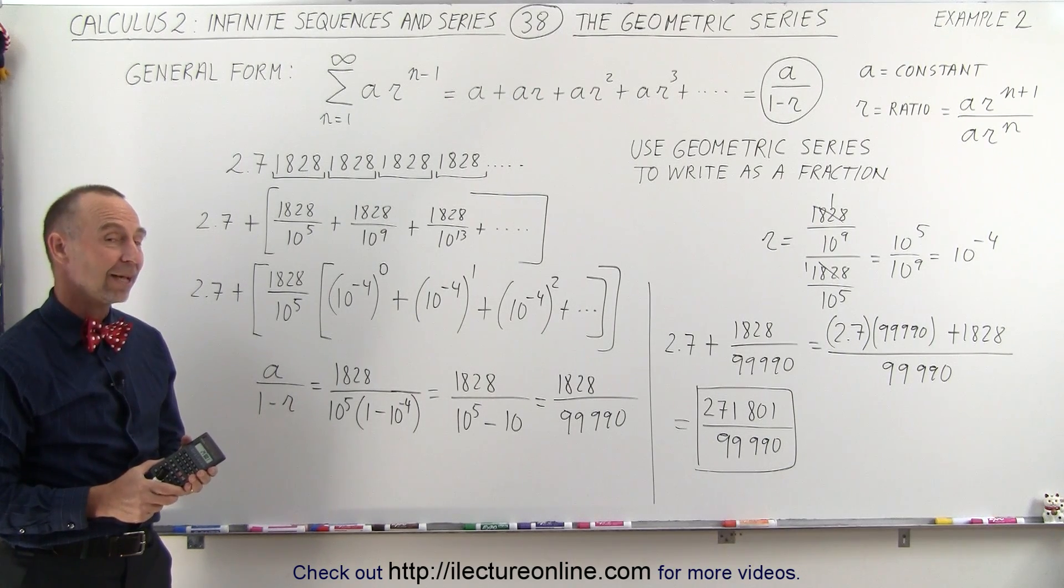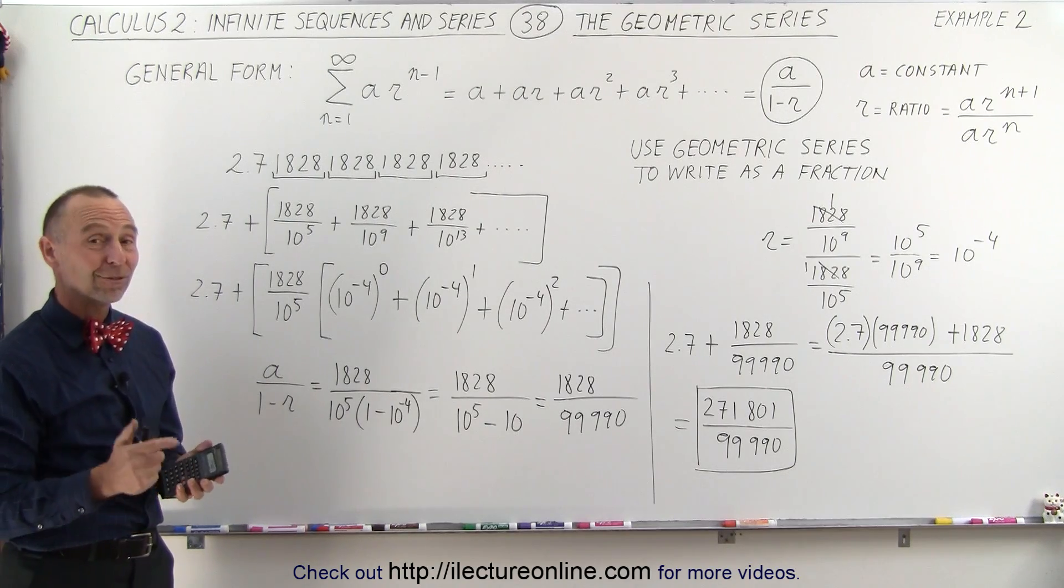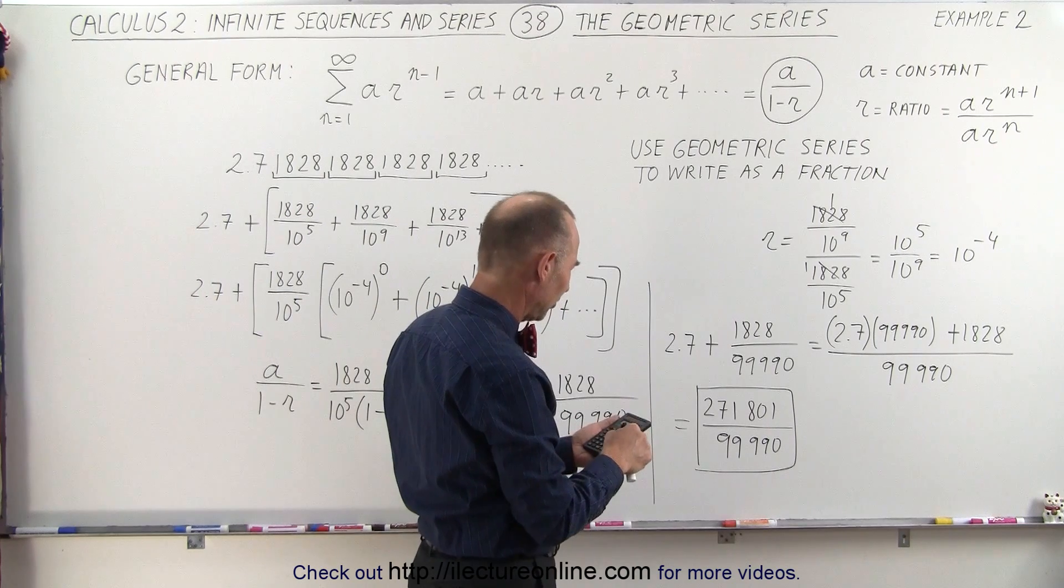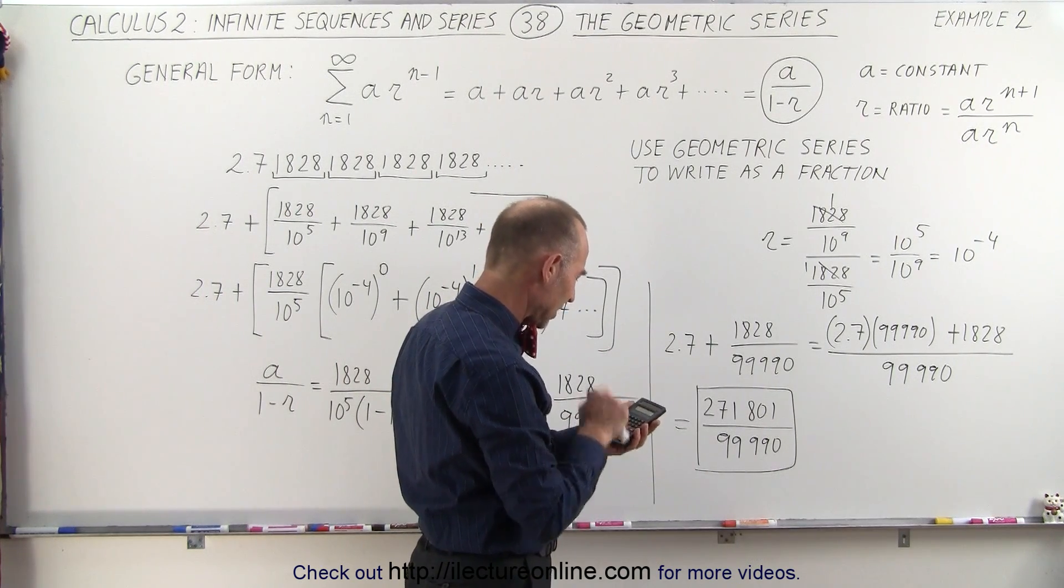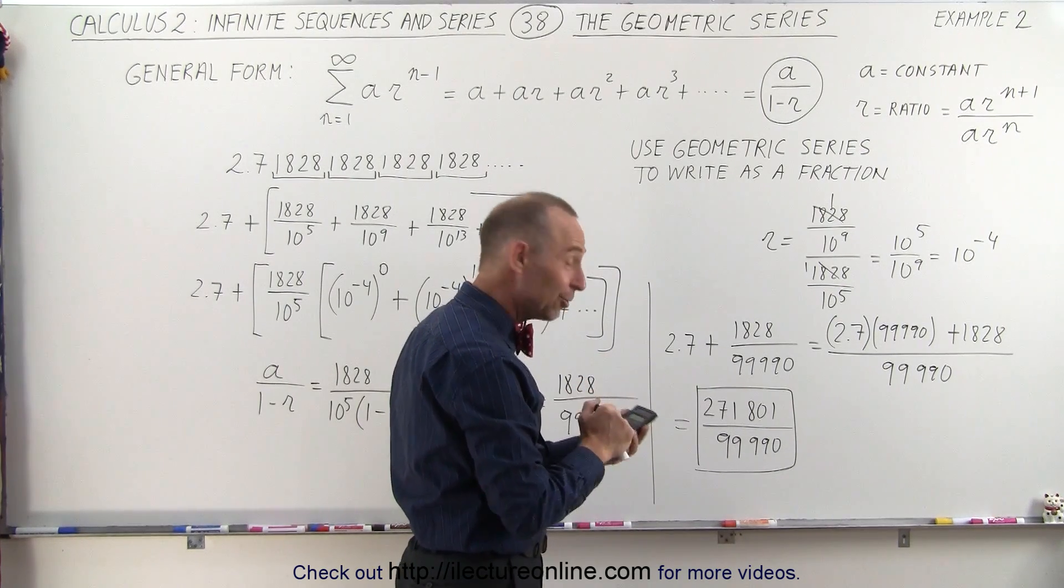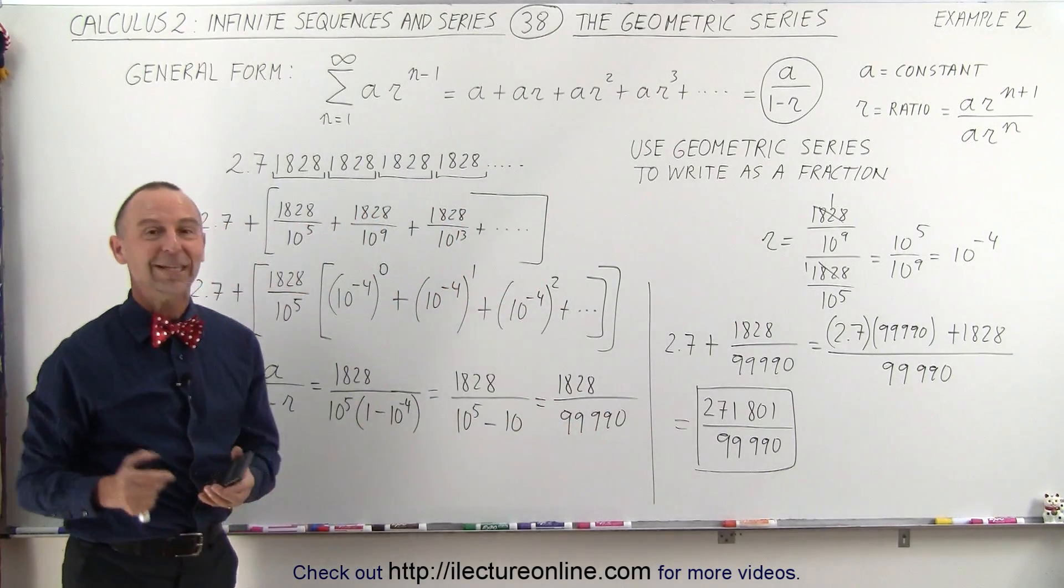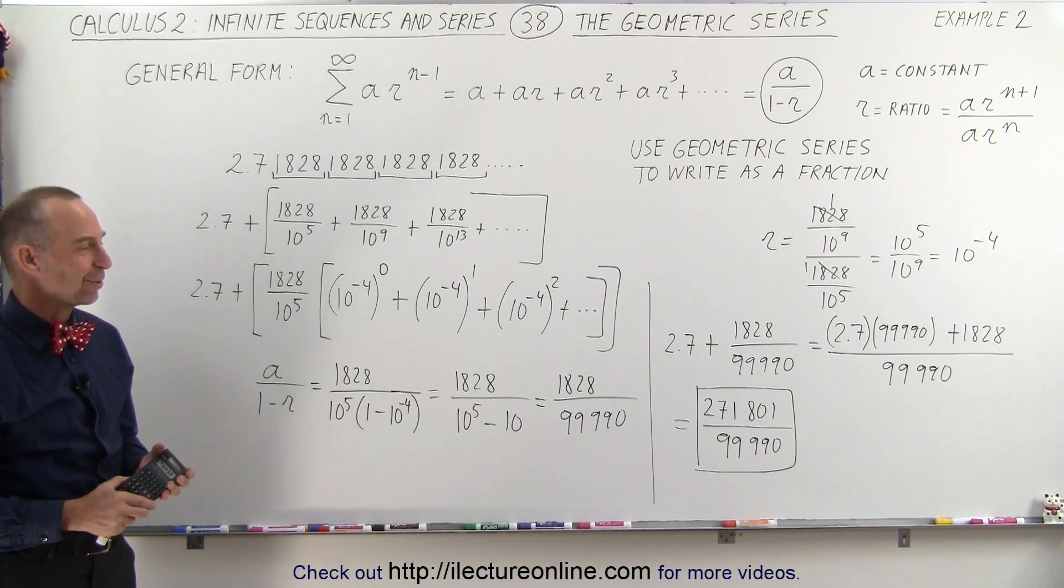Just to make sure we did this correctly, let's divide one by the other to see if I get the correct number. So 271,801 divided by 99,990 equals, and I get 2.7 1828 1828, that's as far as my calculator goes, so it looks like we did it correctly. It's always good to check your answers, and that's how we do it.